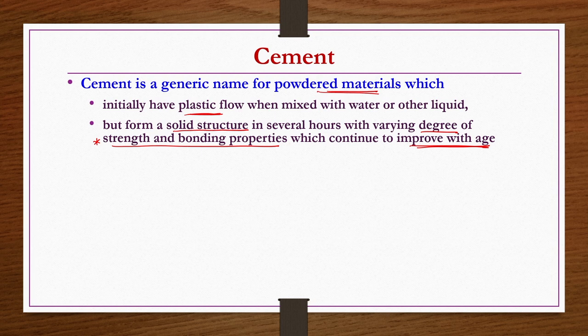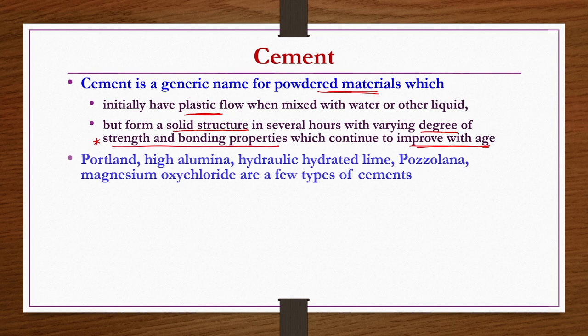There are several types of cements. Portland cement is very common. High alumina cement, hydraulic hydrated lime, pozzolana, and magnesium oxychloride are a few types. We will not be able to discuss all of them, but we will discuss in detail the manufacturing of Portland cement, and also touch on a few characteristics of other cement materials.